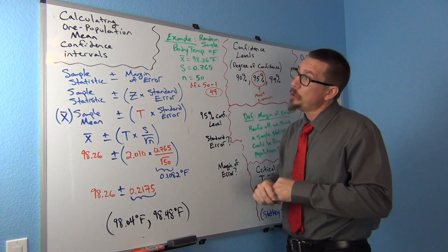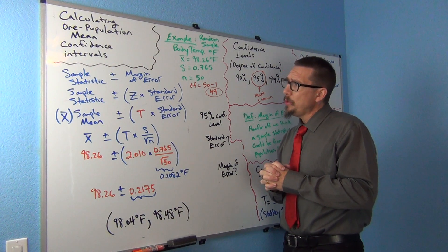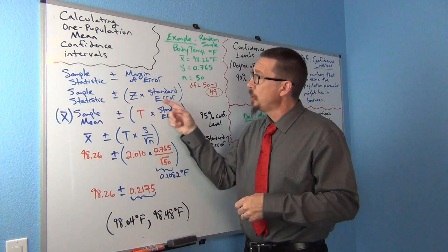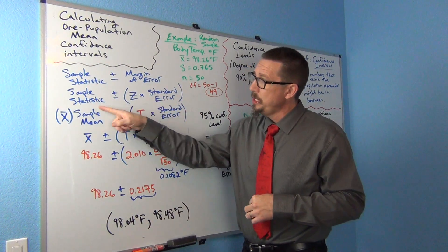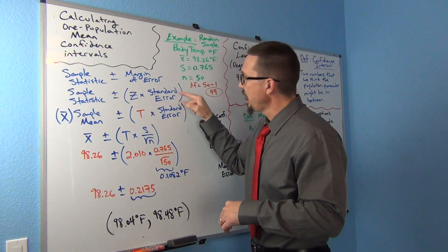The general formula for calculating one population confidence intervals was the sample statistic plus or minus the margin of error. That works for mean averages and for proportions. For a long time, we've seen that this was the formula that people use: the sample statistic plus or minus the z-score times the standard error.